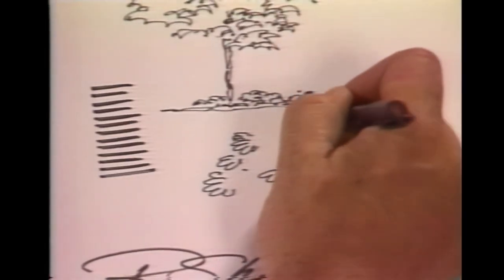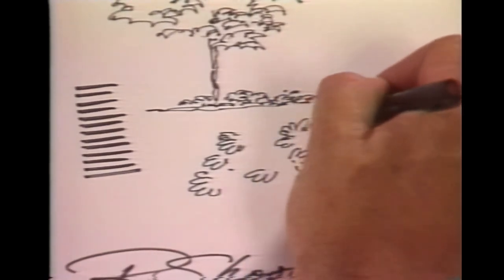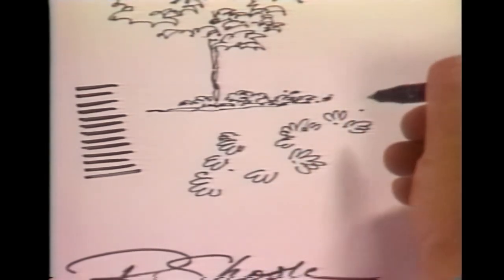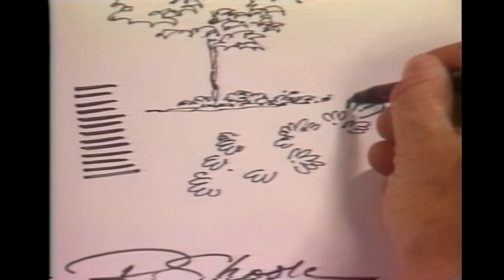For example, we can use the bubble stroke, what I call a bubble stroke, or a little C stroke, backward C in some cases, which is just made by bringing the pen out and around, out and around, out and around.